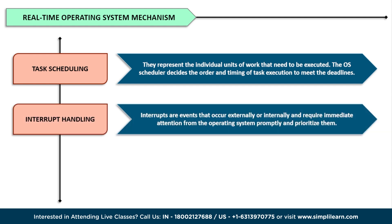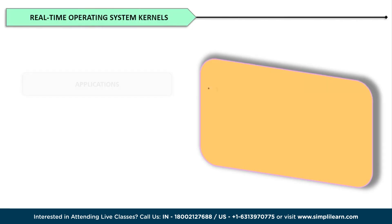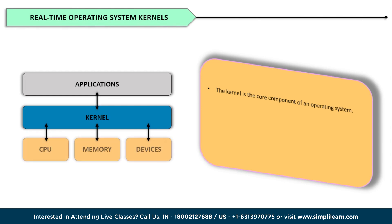Another critical aspect is interrupt handling. Interrupts are events that occur externally or internally and require immediate attention from the operating system. The real-time OS must respond promptly and prioritize interrupts based on their urgency. Real-time operating systems also employ techniques like priority inversion avoidance, ensuring higher-priority tasks are not blocked by lower-priority ones.